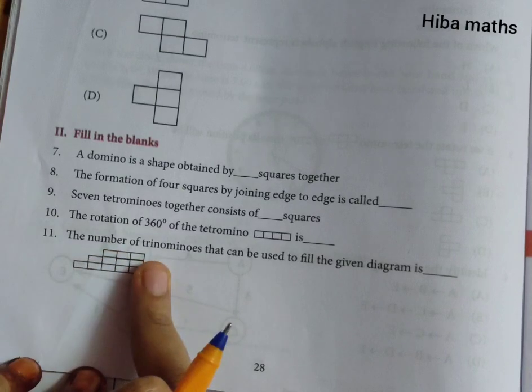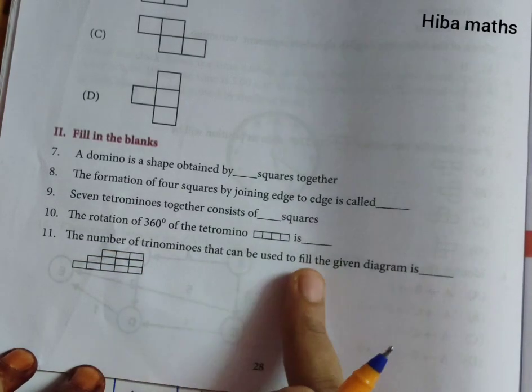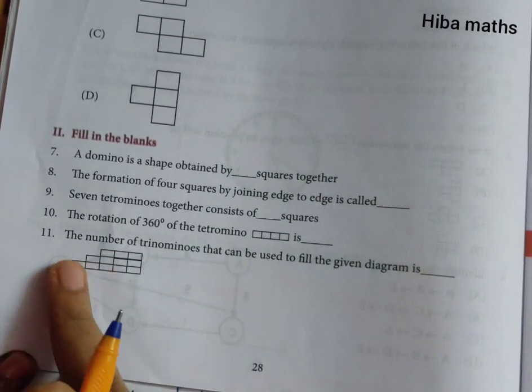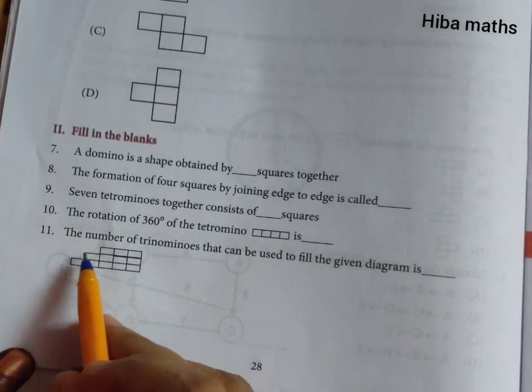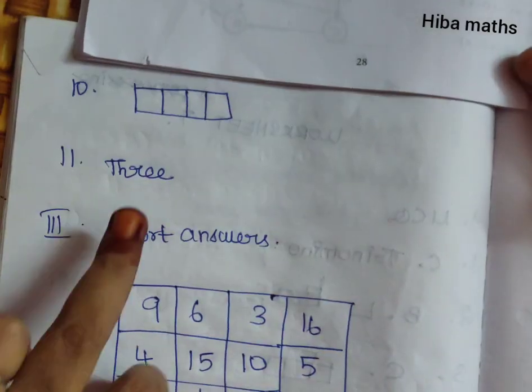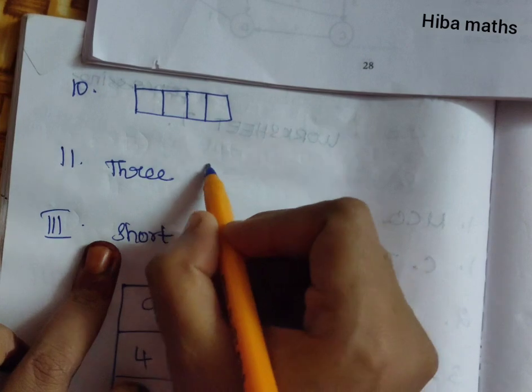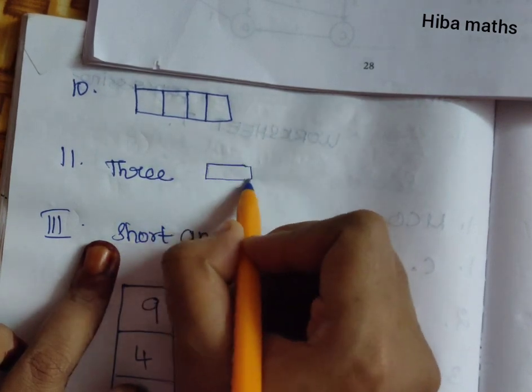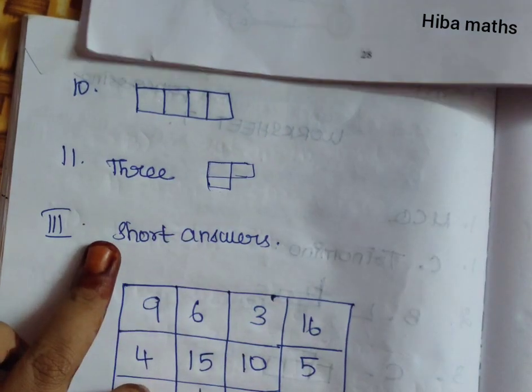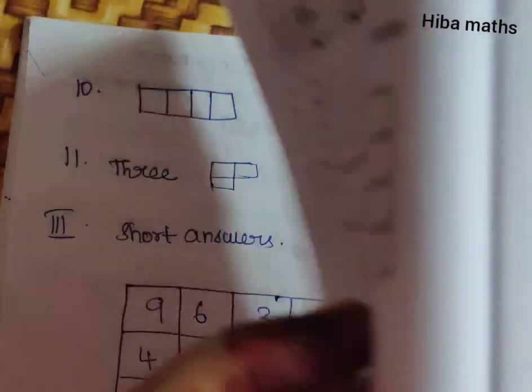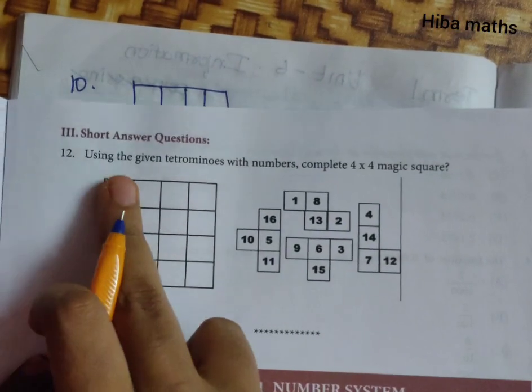The number of trinominoes that can be used to fill the given diagram. The number of trinominoes that can be used to fill the box.